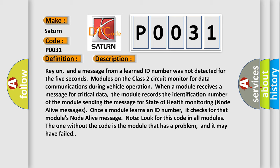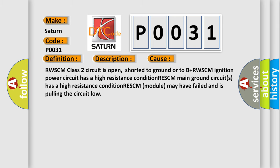This diagnostic error occurs most often in these cases: RWSCM class two circuit is open, shorted to ground or to B plus. RWSCM ignition power circuit has a high resistance condition. RWSCM main ground circuits has a high resistance condition. RWSCM module may have failed and is pulling the circuit low.